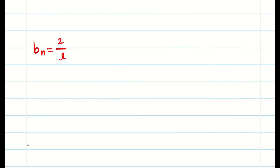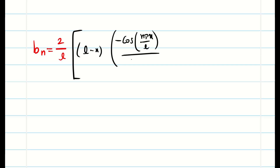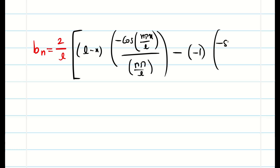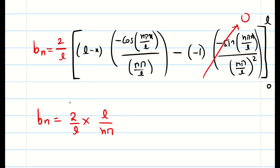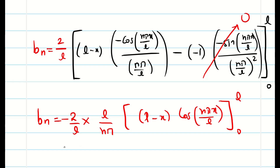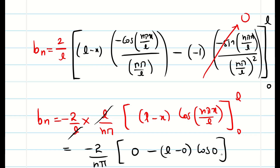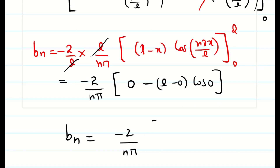Therefore bₙ is equal to 2/l times [(l minus x)(minus cos(nπx/l))/(nπ/l) minus (minus 1)(minus sine(nπx/l))/(nπ/l)²], limit 0 to l. Whether the limit is 0 to l, 0 to π, or 0 to 2π, the sine term is always 0, so only the cosine term exists. Simplifying: 2/l times l/(nπ), taking the minus outside. Substituting the upper limit: l minus l = 0. Substituting the lower limit: (l minus 0) times cos(0). So bₙ = minus 2/(nπ) times (minus l). Minus minus cancels, giving simply 2l/(nπ).